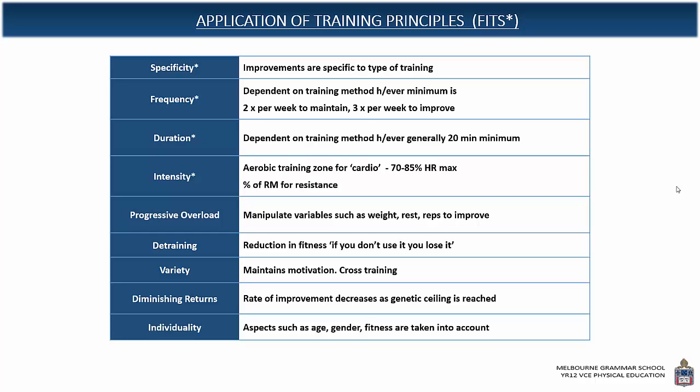Individuality is basically about tailoring a training program to the individual. If they can't run, for example — let's say you're training them for a marathon but they start out not being able to run — you're not going to get them doing hill sprints or a fartlek session; you might start them walking. Factors such as age, gender, and fitness level are taken into account so that the training program is individualized towards the needs of the individual.